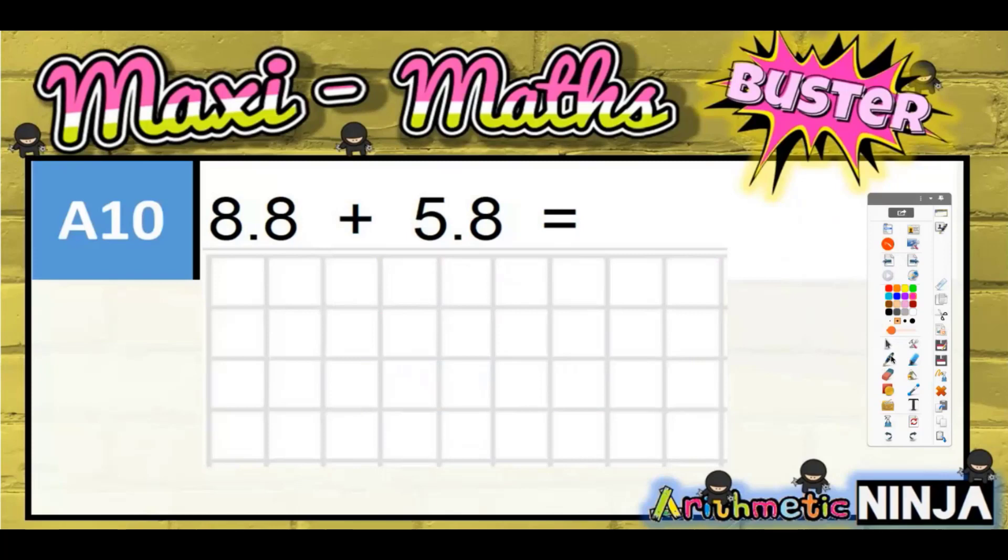Question 10: 8.8 add 5.8. Nice and easy this one. Again, quick column method, almost as quick to do a column method as it would be to try and do it in your head, and possibly less risky.